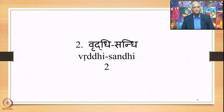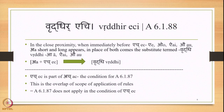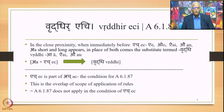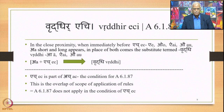We have already studied Vriddhirechi 6.1.88, which means: in close proximity, when immediately before a vowel — that is A, O, I and O — if A short or long appears, then in place of both that vowel and A comes the substitute termed Vriddhi, namely A, I and O. Vriddhi — A, I, O — is defined by Vriddhi Radaich 1.1.1.